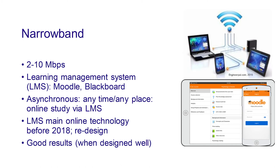Narrowband is in the range of 2 to 10 megabits per second. At that speed, you can run a learning management system like Moodle or Blackboard, and it's also asynchronous — students can access it at any time and any place. That was the traditional way online learning was done up until about 2018, when video streaming and conferencing technologies got better and more bandwidth became available. But if you don't have more than 10 megabits per second, you can still do good quality online learning using more narrowband distribution.